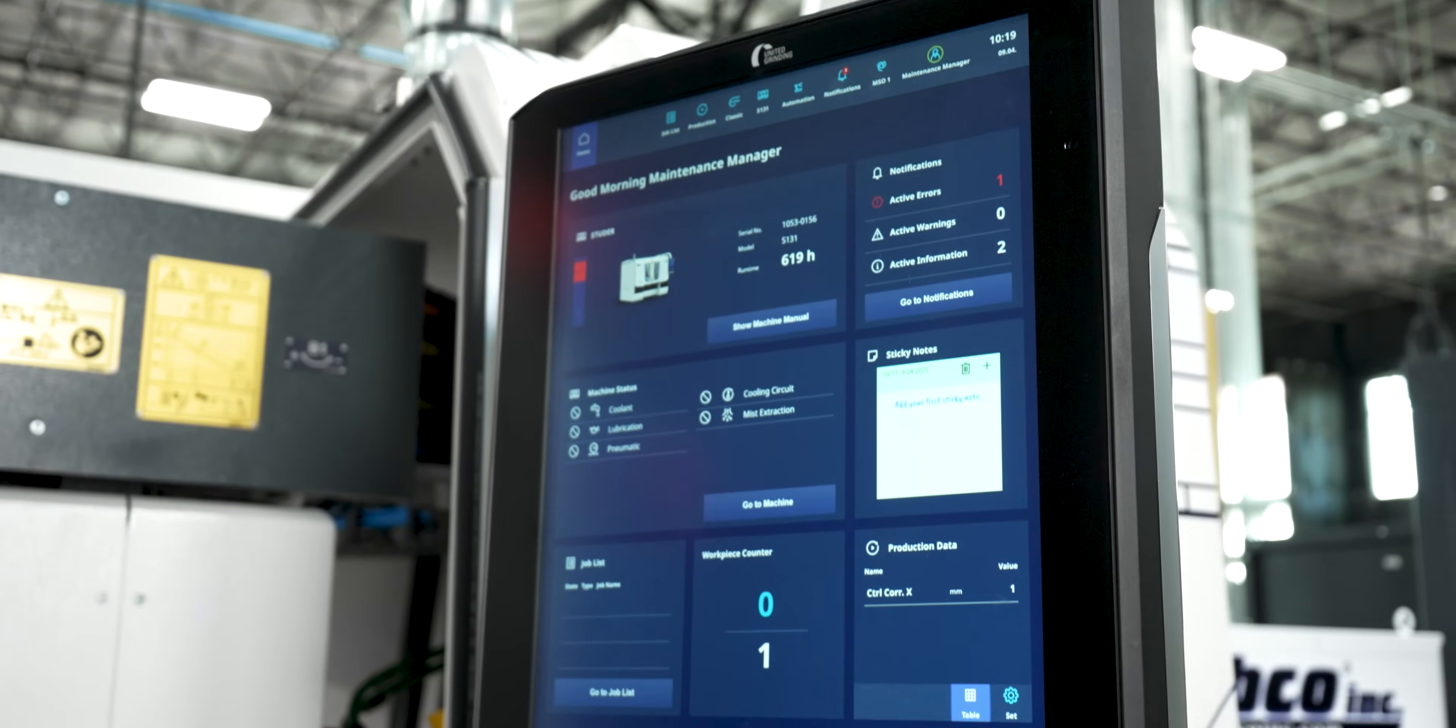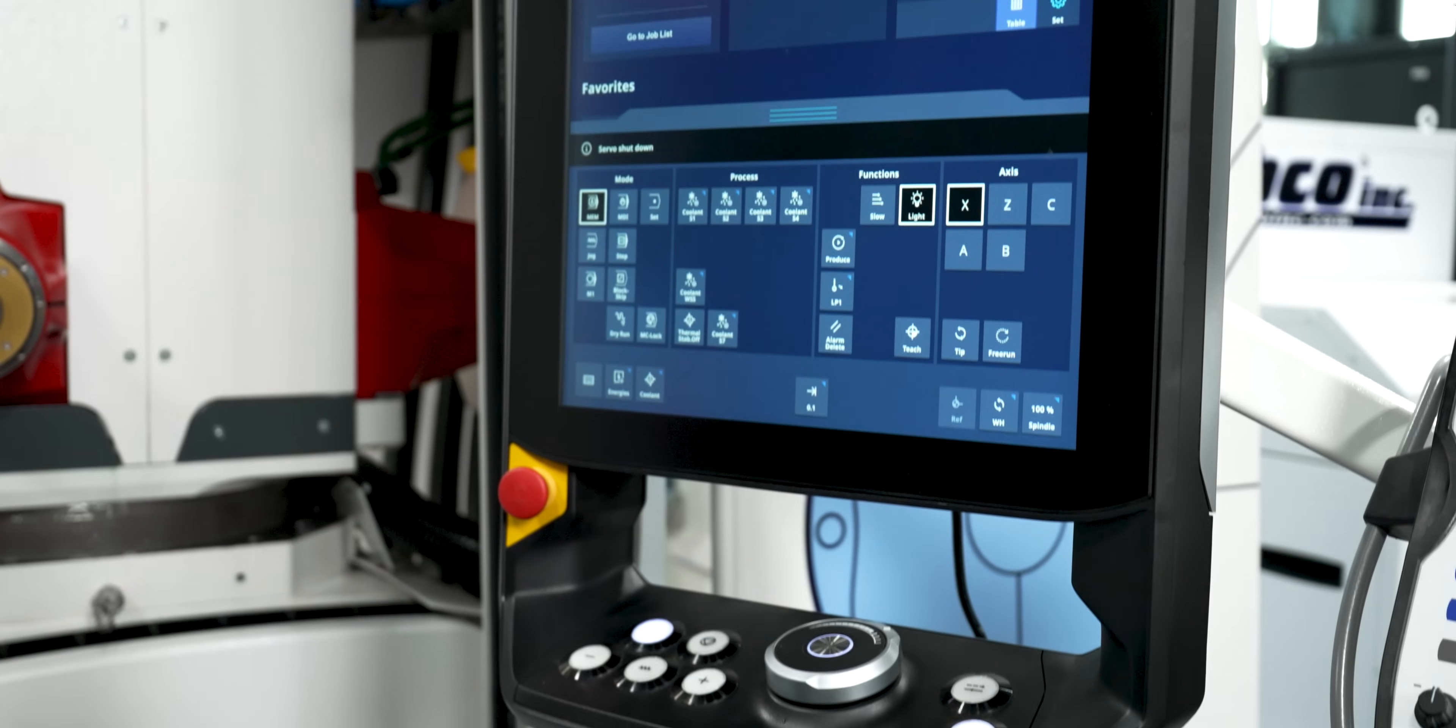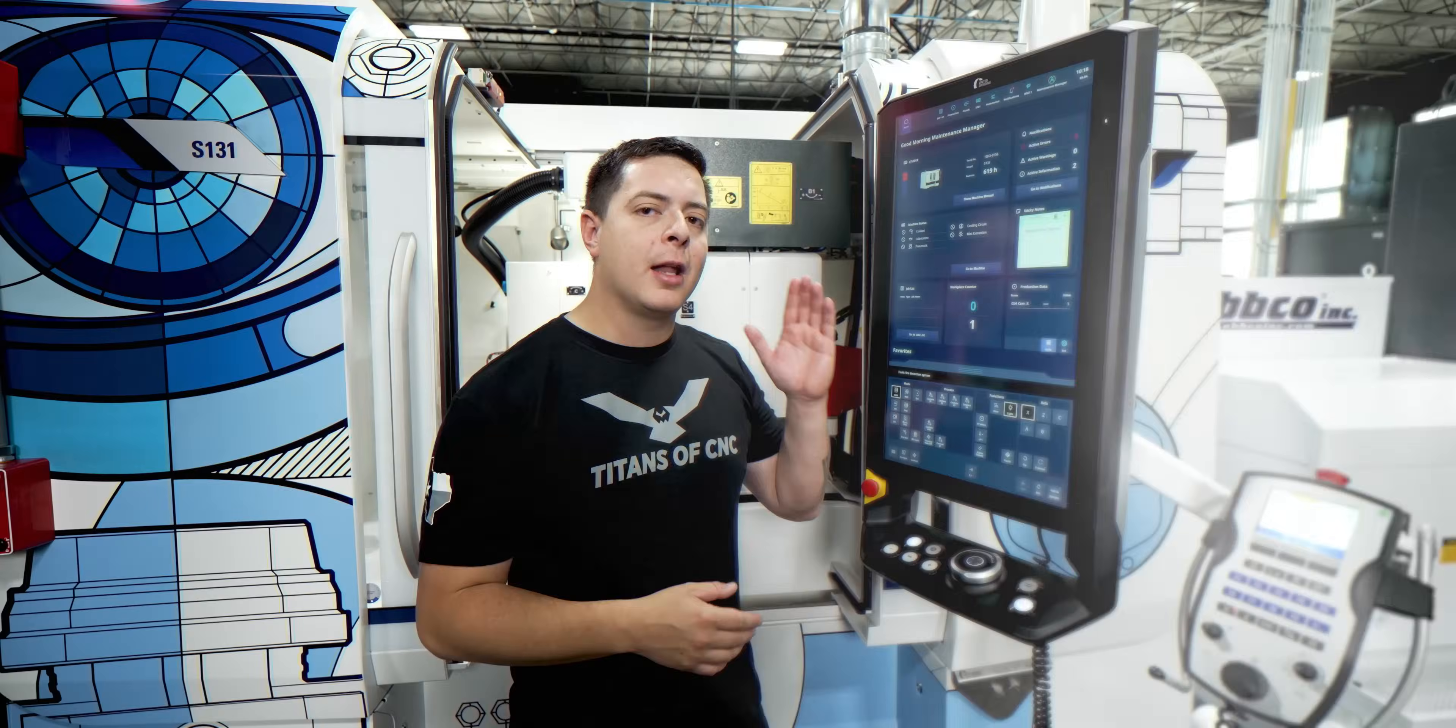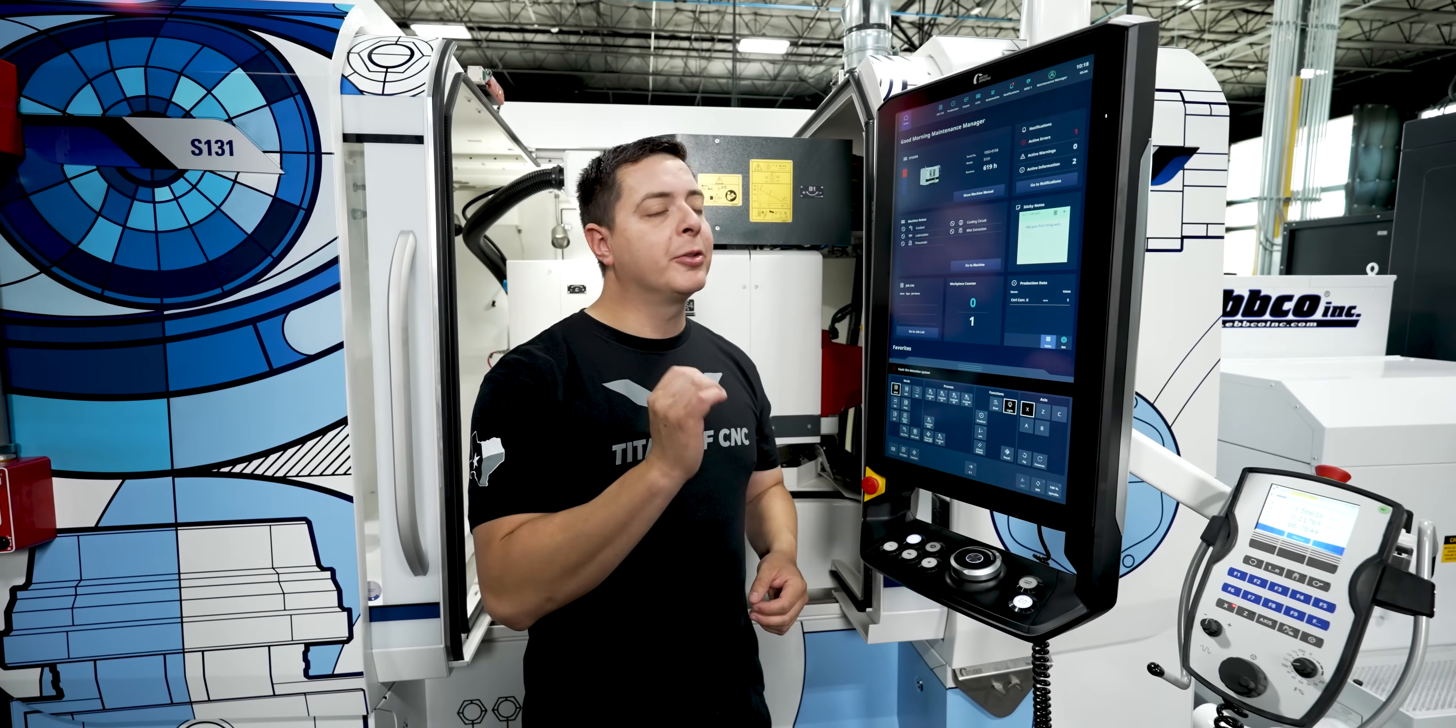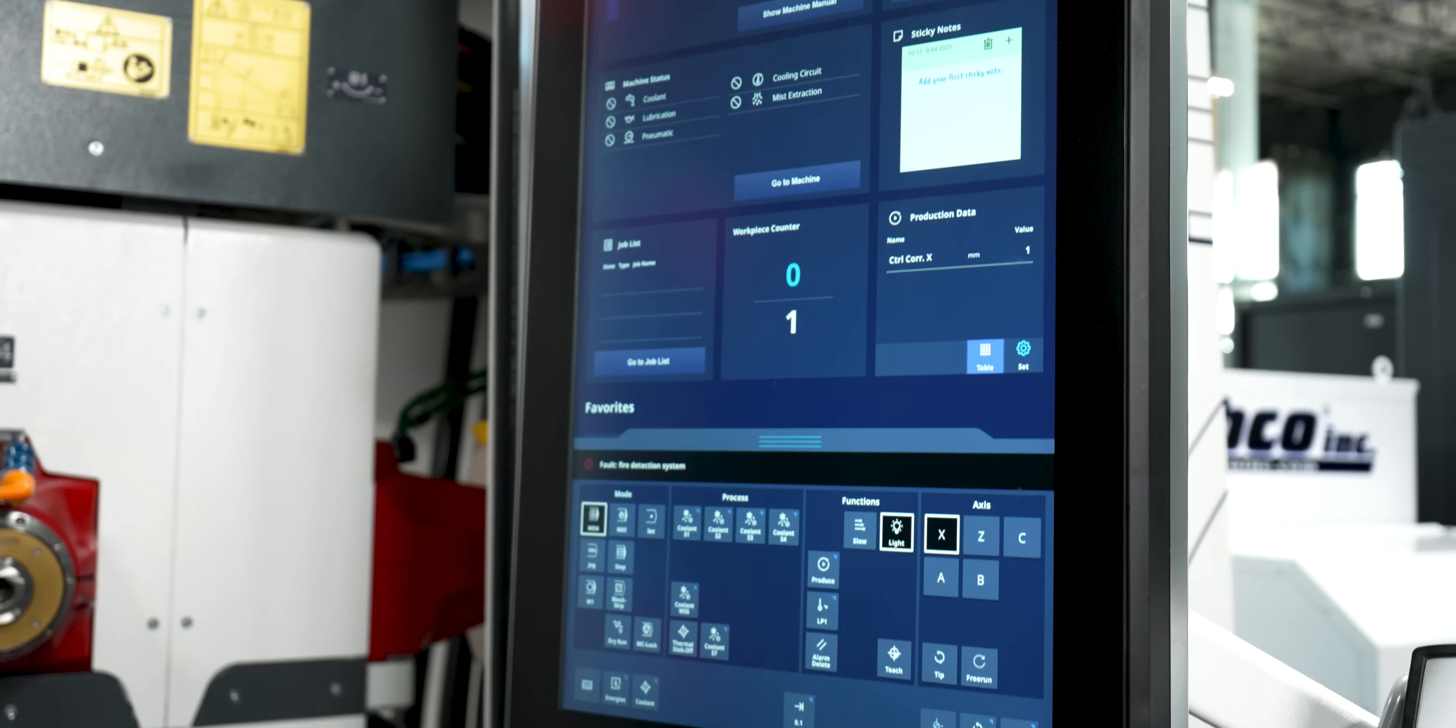So the older machines came equipped with the legacy control. What United Grinding does now is every machine comes standard with the core panel. So what the core panel does is not only does it unlock classic mode, which allows you to go from FANUC to Studer Sim in this case, but you can also connect virtually through digital solutions as long as you have internet connection.